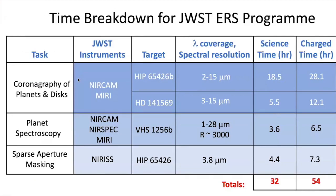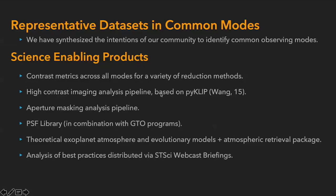In terms of our time breakdown, a majority — about 40 hours — is going to be dedicated to coronography of planets and disks, including one circumstellar disk. The spectroscopy is going to be relatively efficient at about 6 to 7 hours, and we're going to spend about 7 hours on aperture masking interferometry. All in all, we have a 54-hour program with about 32 hours directed to science. We worked hard with instrument scientists at Space Telescope and around the world to organize observations most efficiently, and we feel this is a fairly efficient program at about 60% science efficiency.